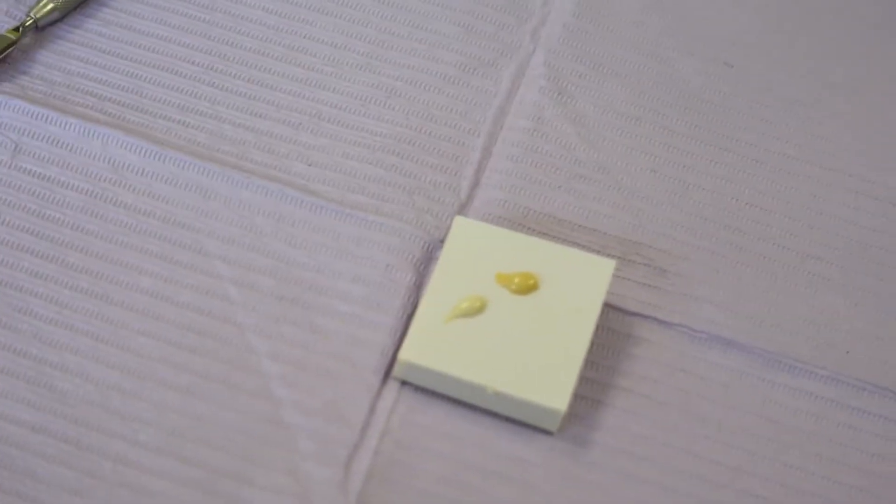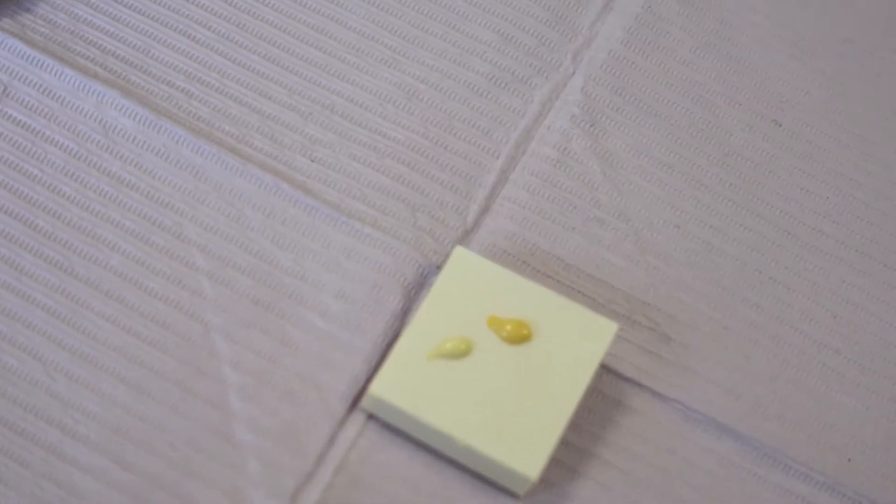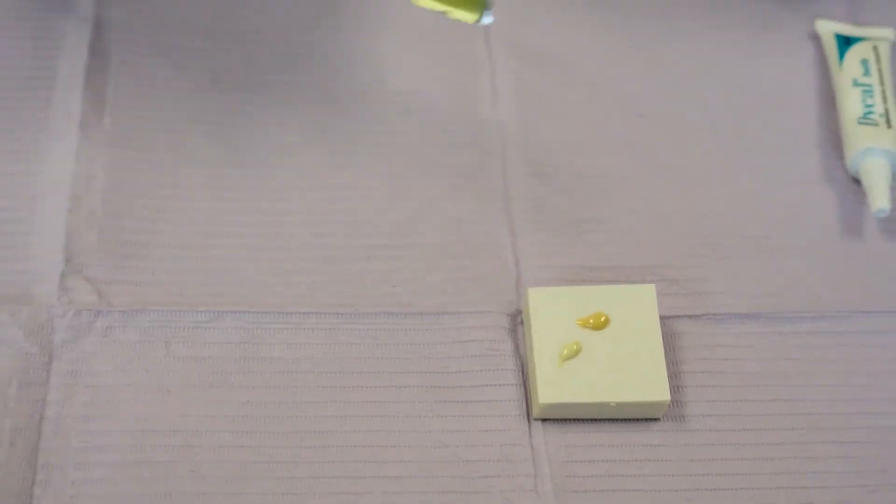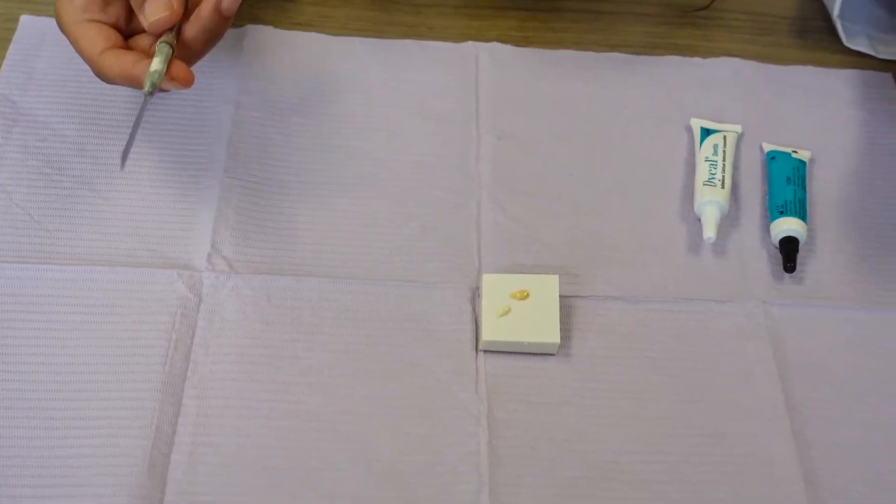This is used as an actual liner. Some dentists like to use this as a liner - it works very well. This is a spatula. We're going to mix it together. It's going to end up being a uniform color.